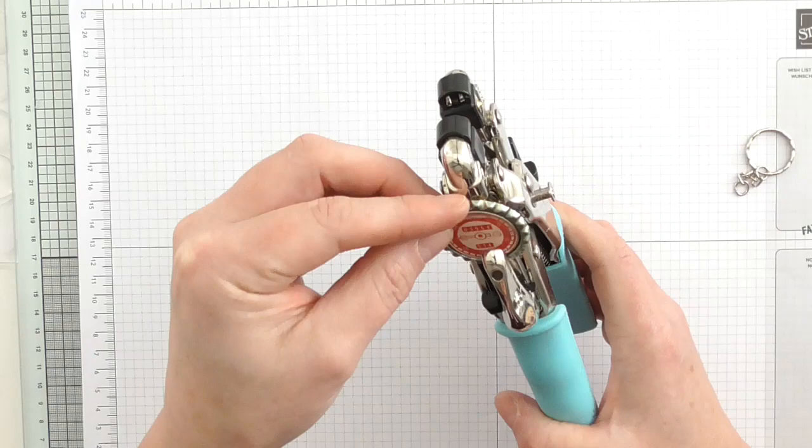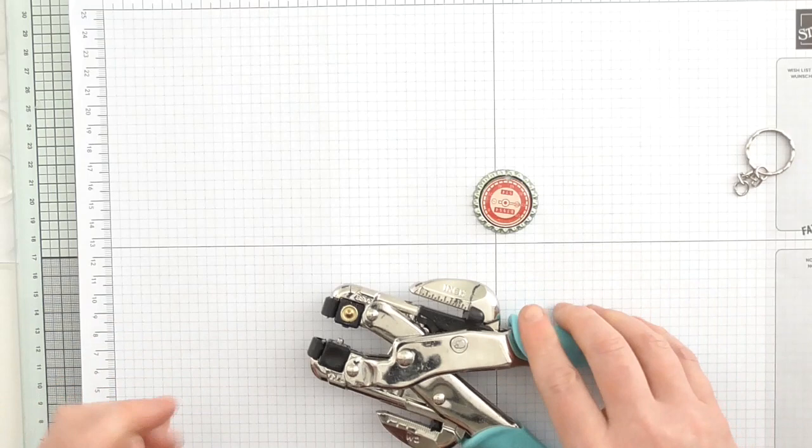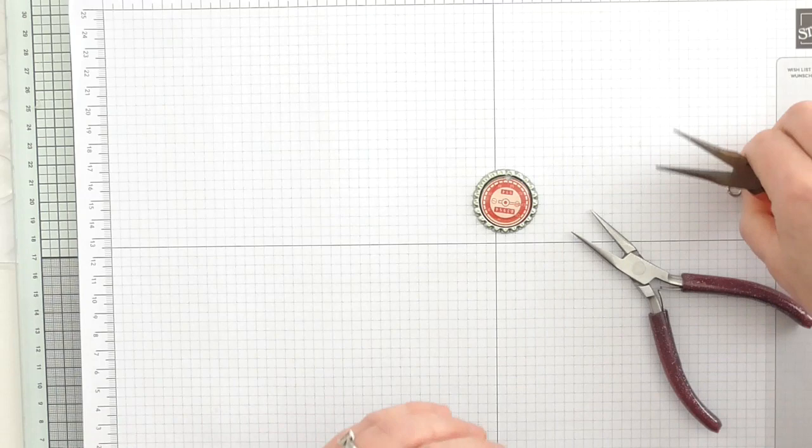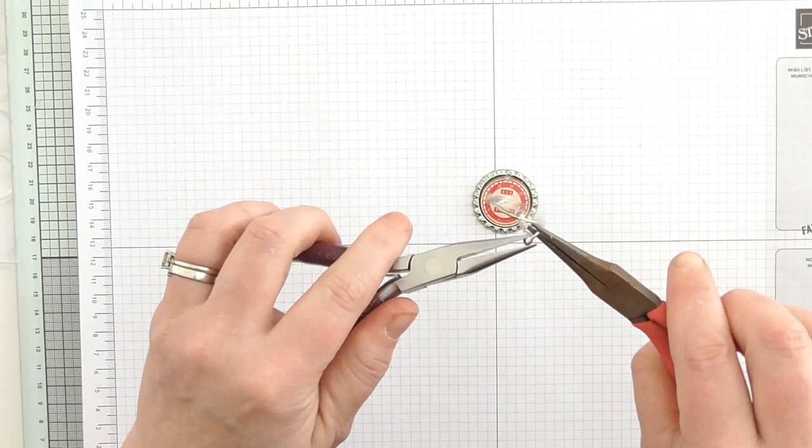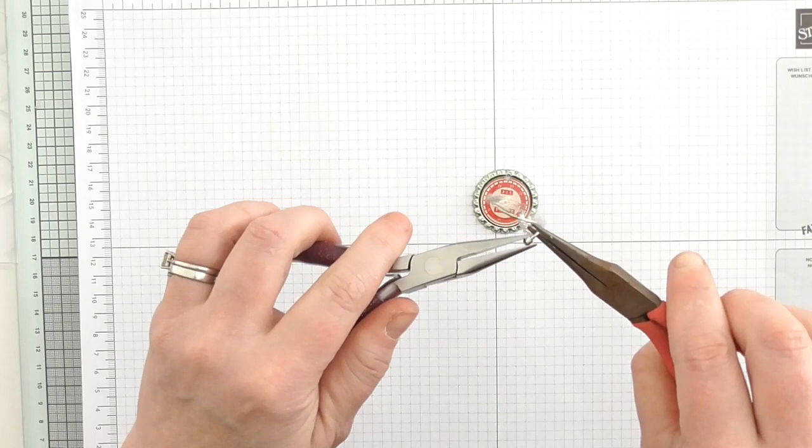Now you could add that to your card as a decorative element. Or what you can do if you've got one of these fellas, which is the Cropadile - if you use the smallest hole, you can very easily put a hole in that bottle cap.